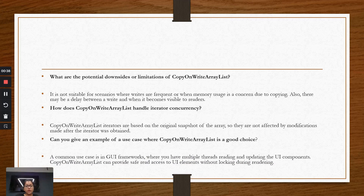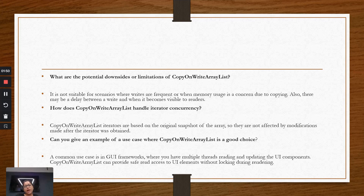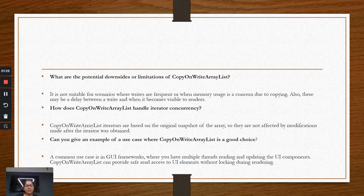How does CopyOnWriteArrayList handle iterator concurrency? Because iterators are based on the original snapshot, they are not affected by modifications. The iterator takes a snapshot and iterates over it regardless of changes to the underlying data structure. A good use case is GUI frameworks where many threads read UI components but few update them — copy-on-write provides safe, lock-free read access during rendering. This was a system-design-perspective discussion about when and why to choose this data structure. Thank you for watching — please subscribe for more videos.